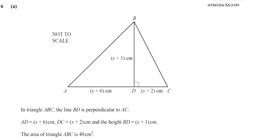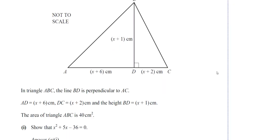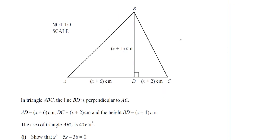This question is from summer 2009, paper 4, question number 6. This is a type of question where many students struggle, where you have to prove some algebraic statement. We're told that the area of triangle ABC is 40 centimeters squared, and we have to show that x squared plus 5x minus 36 equals 0.